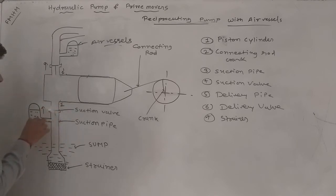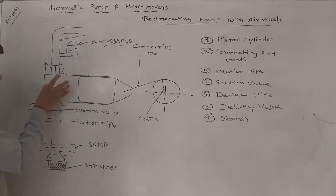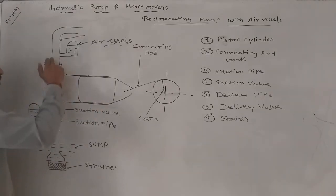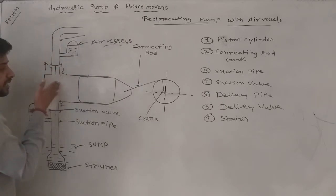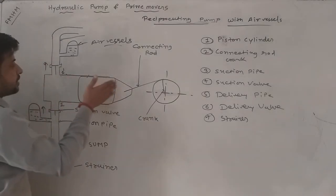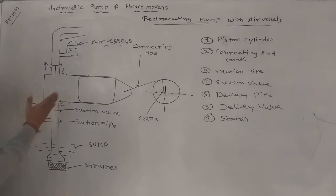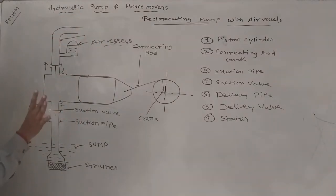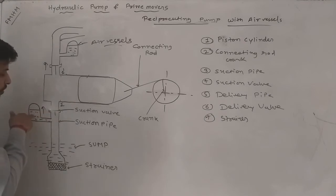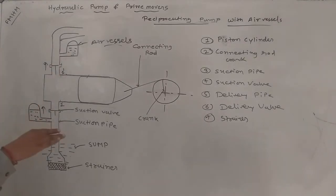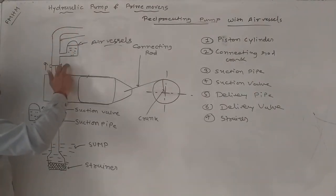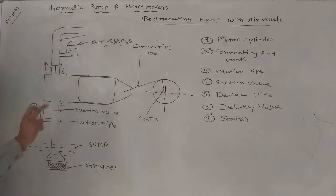When pressure in the suction pipe is low, the air vessel maintains it. When the piston moves leftward and rightward, if there is no fluid at discharge, the air vessel at the delivery valve side stores fluid. When pressure is high the air vessel fills; when pressure is low, the air vessel releases, ensuring no break in discharge.